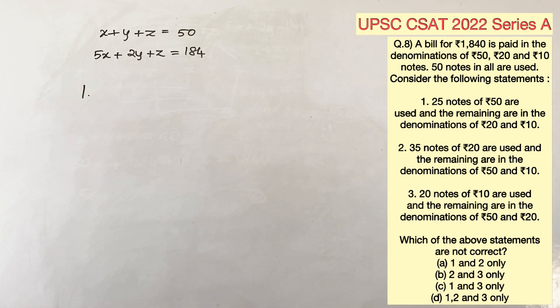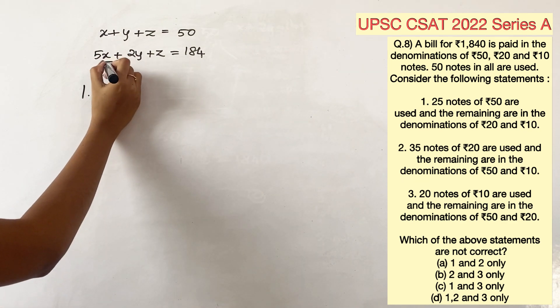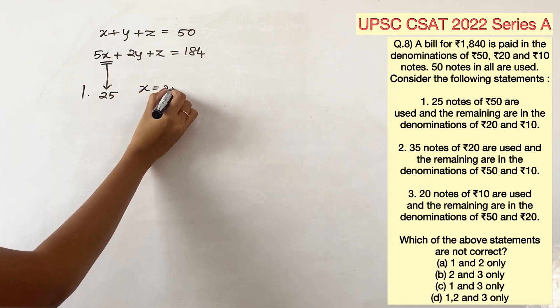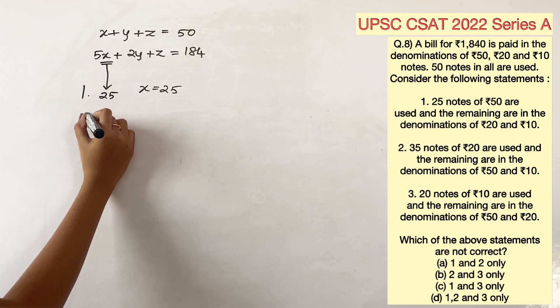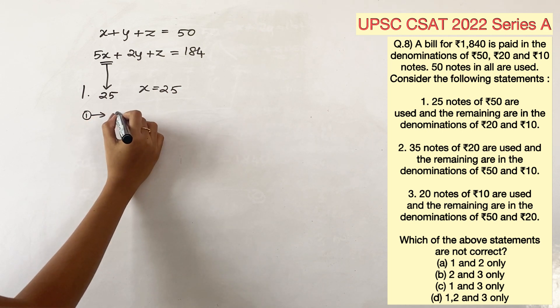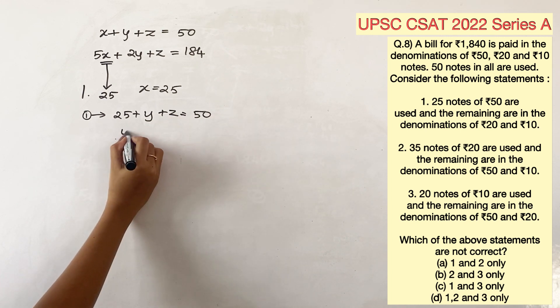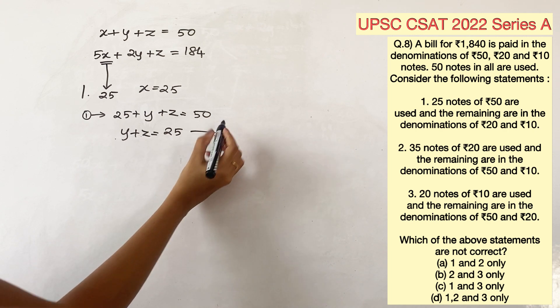The first statement says, 25 notes of 50 rupees are used, and the remaining are in the denominations of 20 and 10, which basically means x is equal to 25. Substituting x in the two equations, this gives us 25 plus y plus z is equal to 50. y plus z is equal to 25.